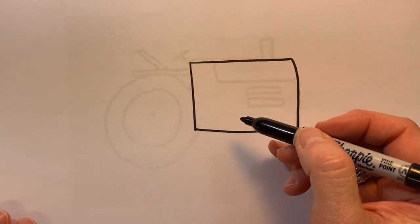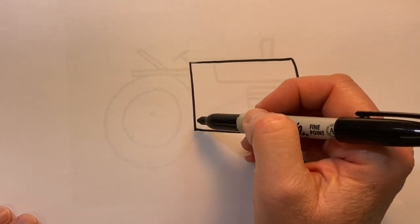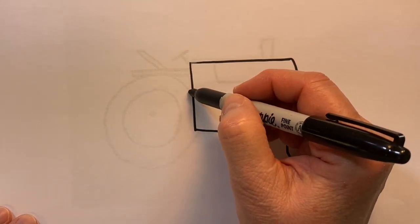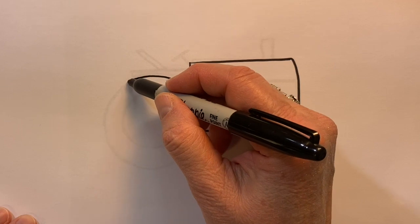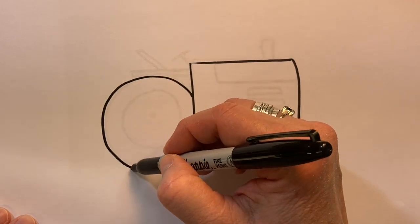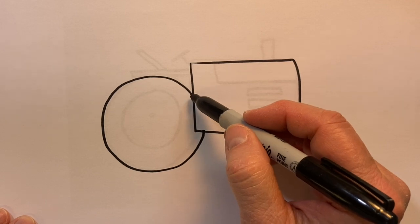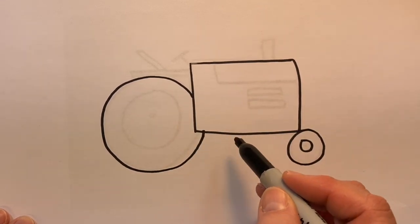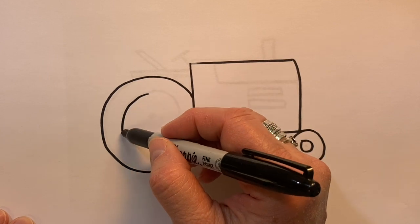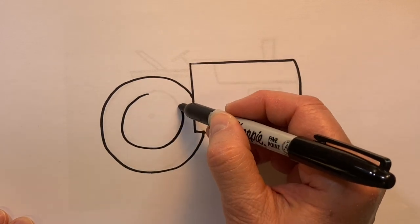And then for the back wheel it's a lot bigger and it's a circle but it's not a completed circle. It starts on the side of the tractor and ends up at the bottom and I'll double line that circle.